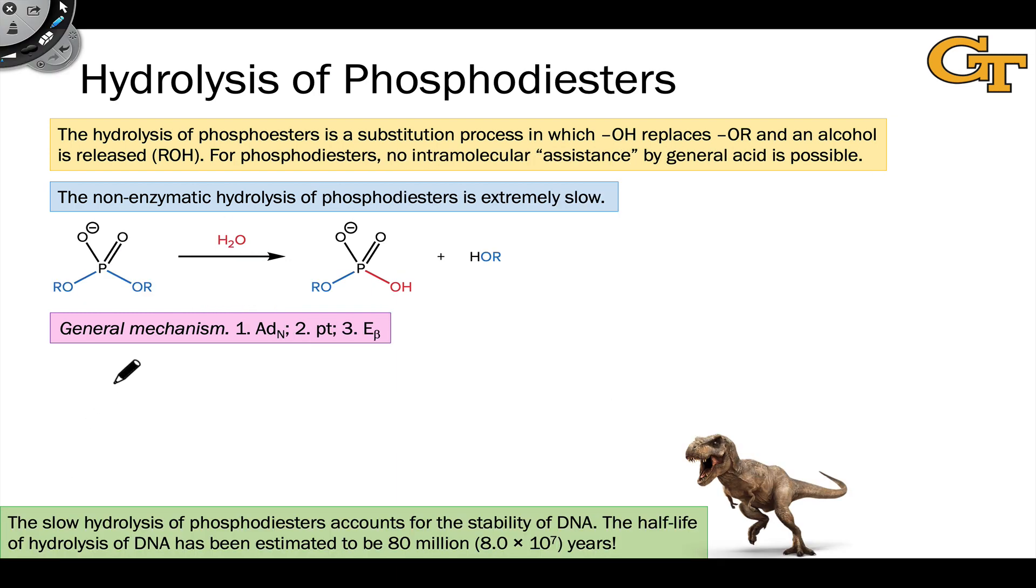Phosphodiesters, on the other hand, react much more slowly in hydrolysis reactions. So notice here again, the basic reaction type is the same as in the case of phosphomonoesters. What we're doing is replacing a leaving group, the O-R group, with a nucleophile, the OH group from water. This process happens much more slowly than the hydrolysis of phosphomonoesters, because now we have another alkoxy group here, which is incapable of acting as a general acid. No intramolecular assistance by a general acid is possible in a phosphodiester.